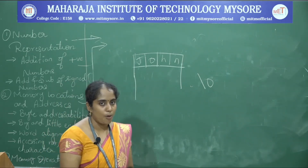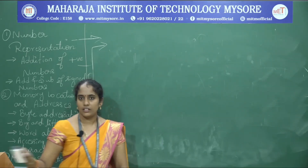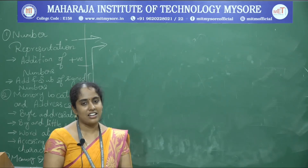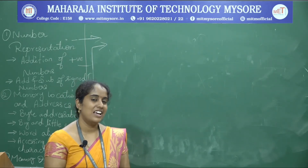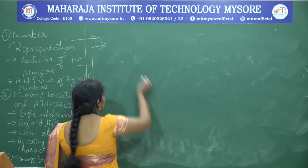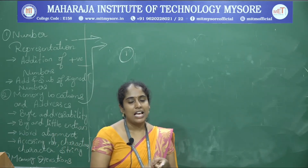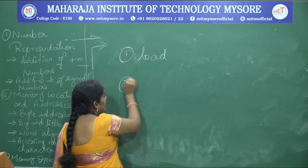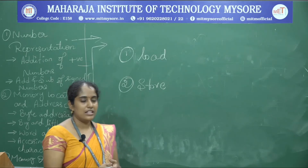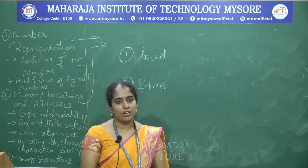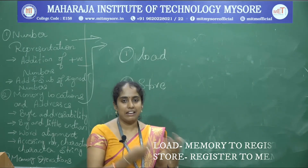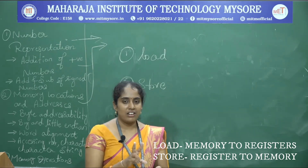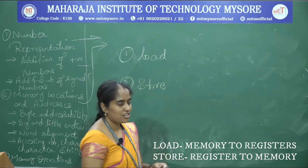The next topic is memory operations. We have different sets of instructions: arithmetic, logic, load, and store. For memory operations, we need two instructions: load and store. When the processor needs to execute a program, it needs data. The data must be transferred from memory to the processor — that instruction is called load.